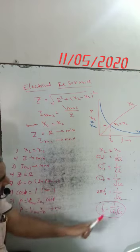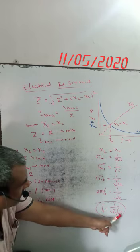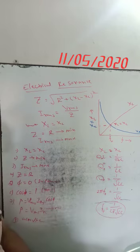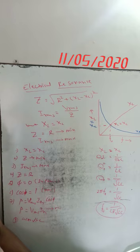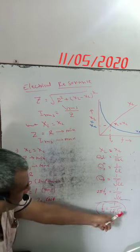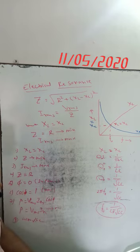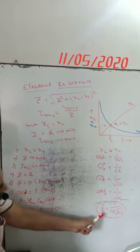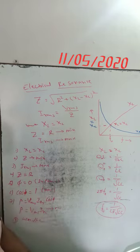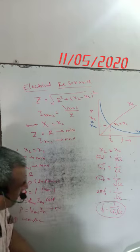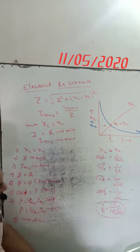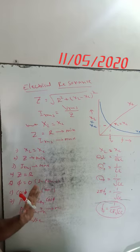The resonance frequency depends upon the self-inductance L of the coil and the capacitance C of the capacitor. If L and C values increase, resonance frequency decreases. If L and C values decrease, resonance frequency increases.